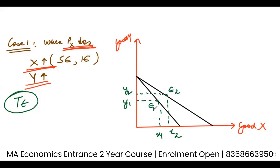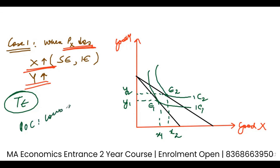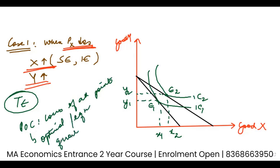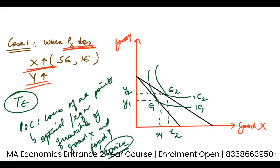My initial equilibrium was E1 with IC curve 1, and the new equilibrium is E2 with IC curve 2. The POC is the locus of all optimal or equilibrium quantities of good X and good Y whenever a price change takes place. Joining these optimal points E1 and E2 gives the POC. In case 1, you can see that the POC is upward sloping.